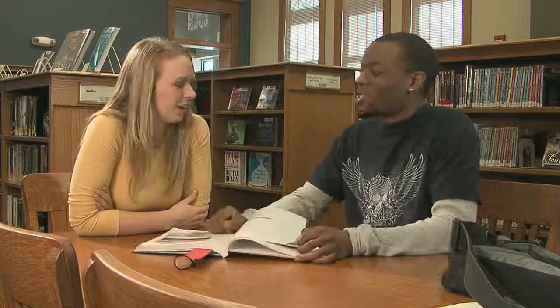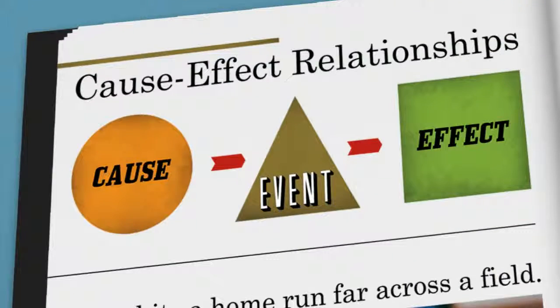What do you mean by cause-and-effect? Let me show you. Cause-and-effect text structure is what authors use to describe an event — what causes or makes that event happen, and the effect, or the result of that event. But what's with that diagram? It's a graphic organizer. It helps you visualize how something causes an event to happen, which results in an effect.